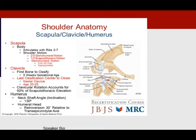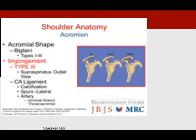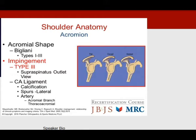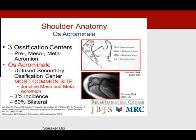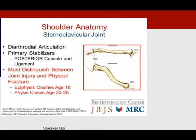Remember that one-third of the shoulder's motion is scapulothoracic while two-thirds is glenohumeral. Louis Bigliani and others helped describe the shape of the acromion from type 1, type 2, and type 3. Most of the time the acromion fuses, but in 3% — though 60% bilaterally in those individuals — an os acromiale can be found, most commonly located between the meso and the meta acromion.